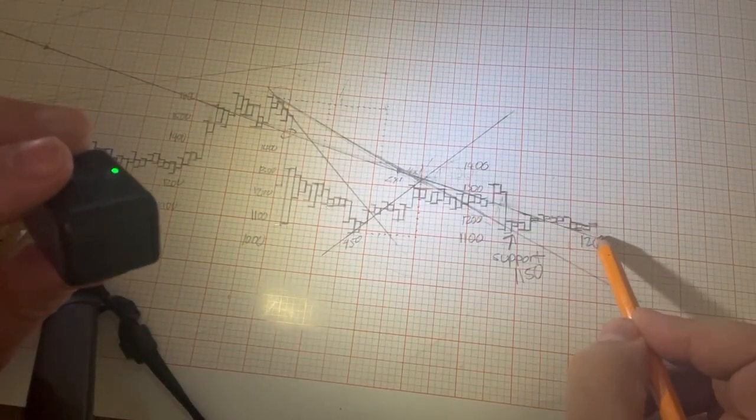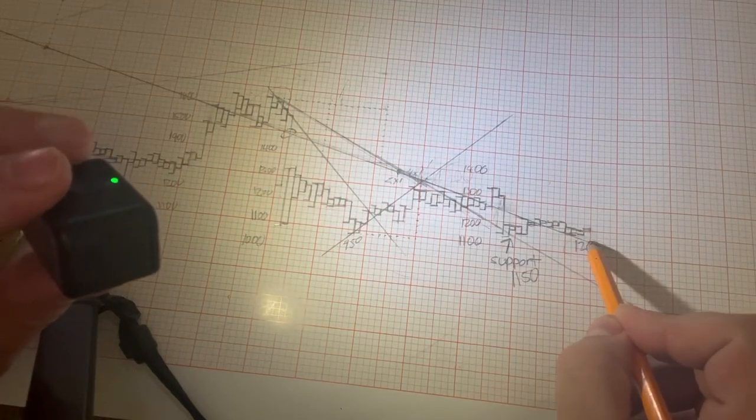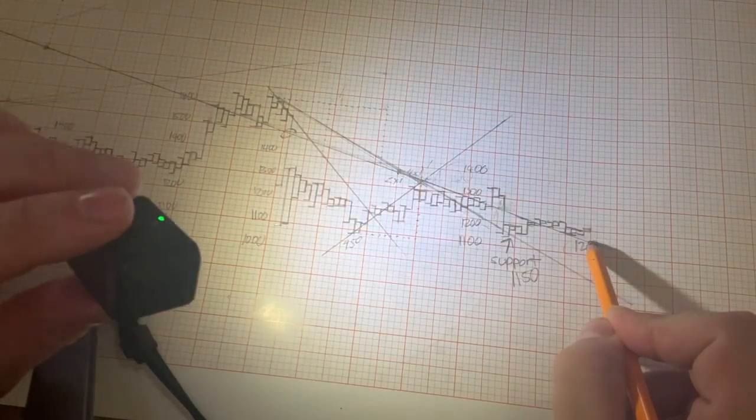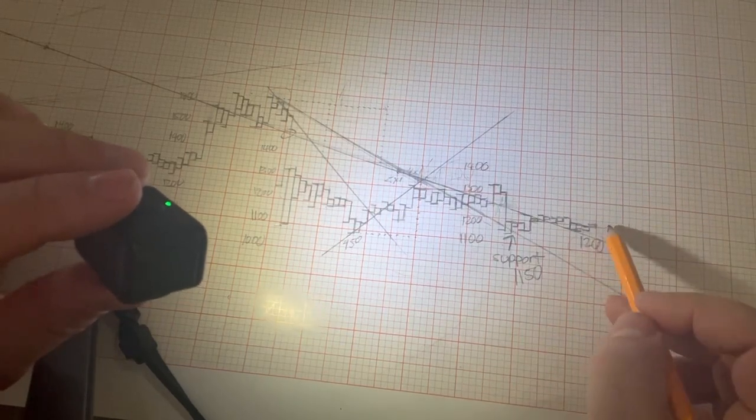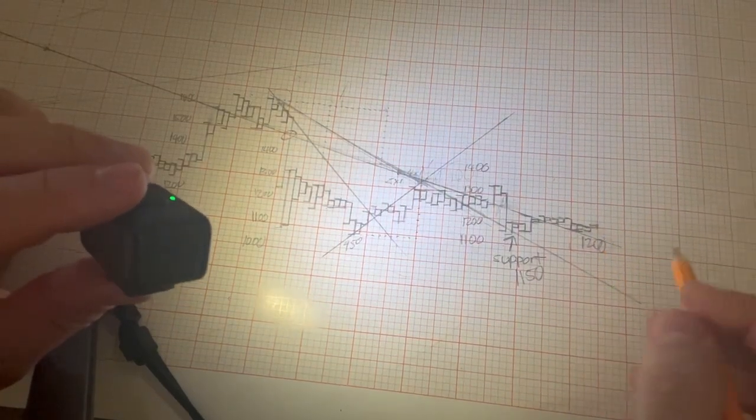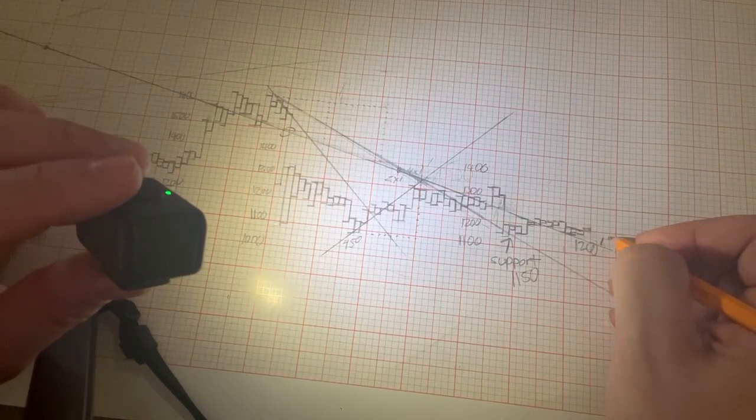Actually, at the moment, it's probably right around $1,150. So what do you think would happen if there was a flash dump in ETH to, say, $1,150?